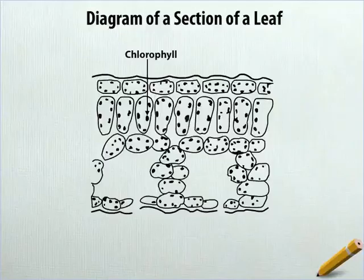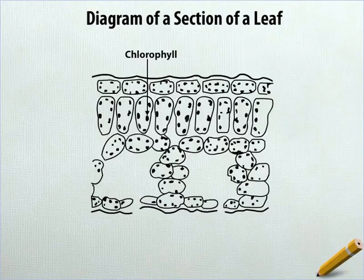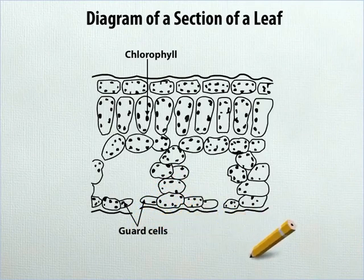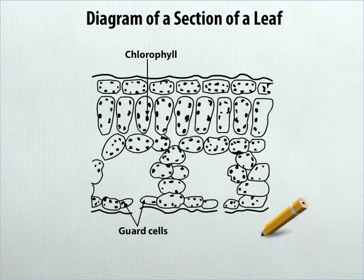In the left circle, label two irregular structures at the bottom as guard cells. In the right circle, label the opening between the two guard cells as stoma.